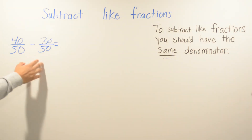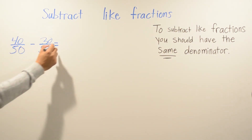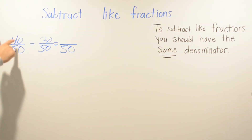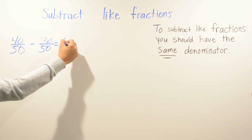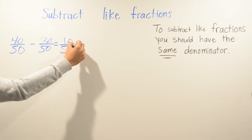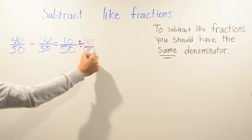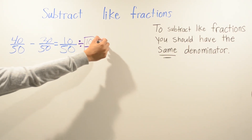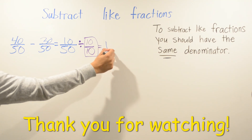The denominator is the same so we can go ahead and subtract. We leave 50 still the same, and then we subtract our numerator: 40 minus 30 is going to be 10. We can still simplify, so we simplify by 10. 10 goes into 10 one time, and 10 goes into 50 five times. So your answer is 1 over 5.